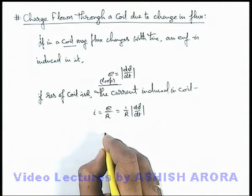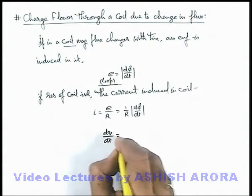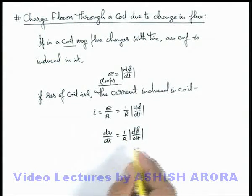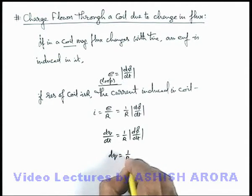Now in this situation we can write this current i as dq/dt, the rate of flow of charge, which is 1/R magnitude of dφ/dt. In this situation we can further write dq as 1/R dφ.